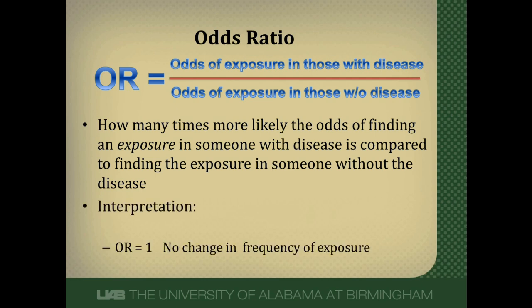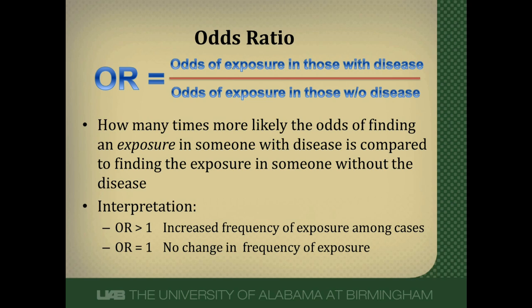An odds ratio of 1 means no change in frequency of exposure. Greater than 1 means increased frequency of exposure among cases. Less than 1 means decreased frequency of exposure among cases. Physicians often use it as an assessment of risk of disease, which is okay for clinical purposes, but it's not absolutely technically correct.